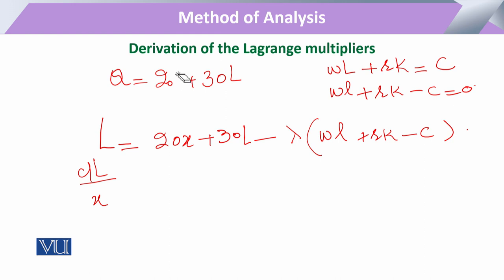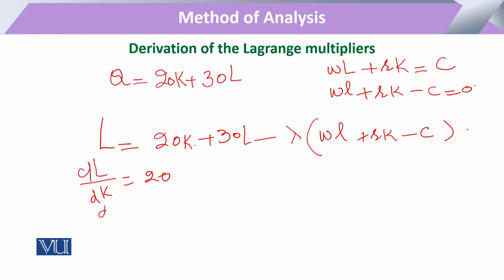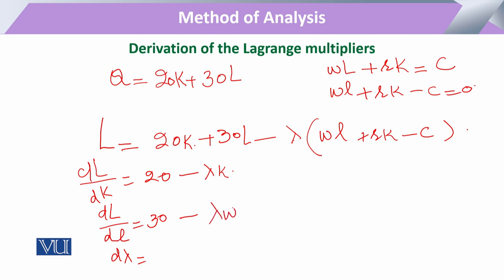आसानी के लिए X की जगह K रखते हैं। With respect to K का पहला derivative लें तो that will be equal to 20. When we take the derivative with respect to labor L, that will be 30. With respect to K, the lambda term gives minus λR, and with respect to L it gives minus λW. With respect to lambda, the whole constraint function comes out.